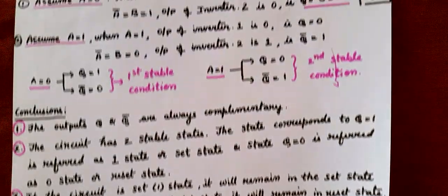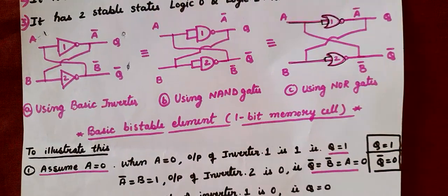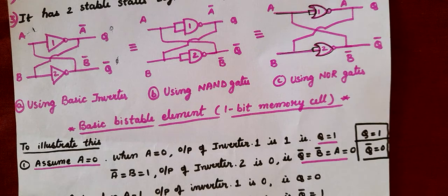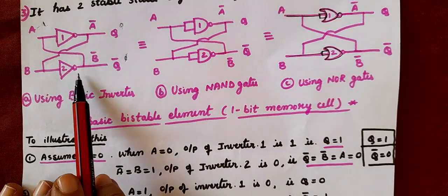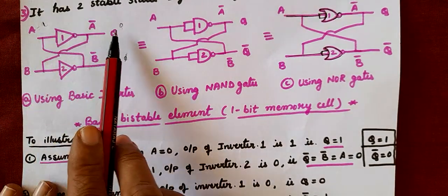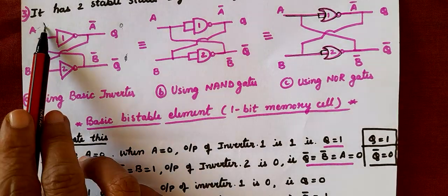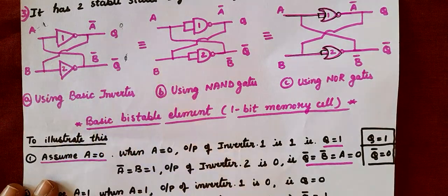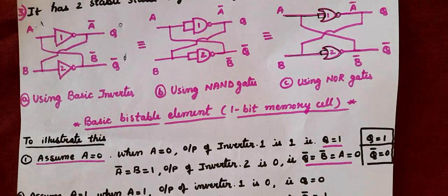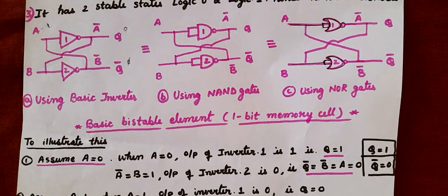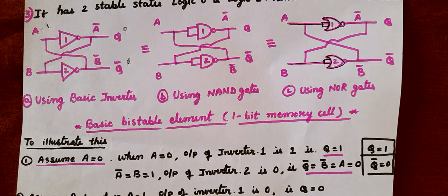I hope you have understood this latch working. A 1-bit memory cell diagram is very easy — it is a cross-coupled inverter. When A is 1, Q is 0 and Q-bar is 1; when A is 0, Q is 1 and Q-bar is 0. I hope you have understood the class. If you have any queries, you can post in the comment section. Thank you and good luck, students.